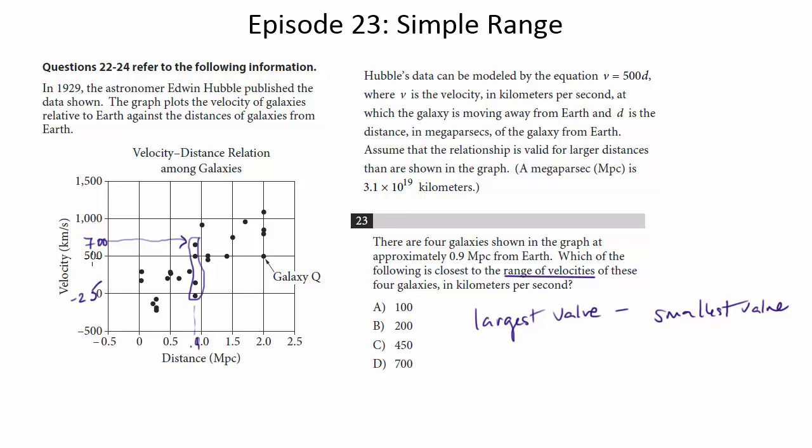Let's go ahead and find the range. We're going to do the largest value, which is 700, minus the smallest value, which is negative 25. Again, you're subtracting negative 25. That's the same thing as plus positive 25.